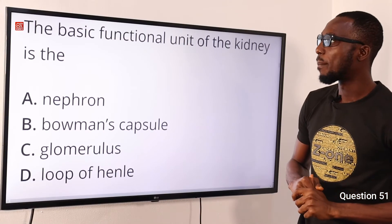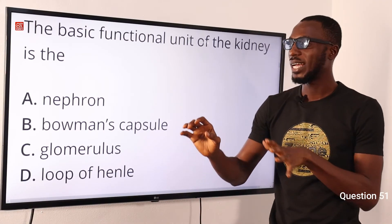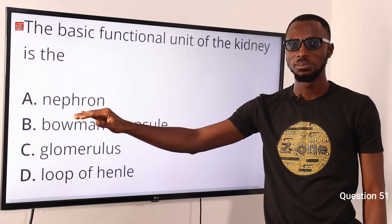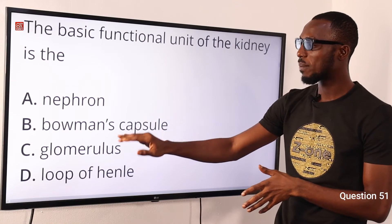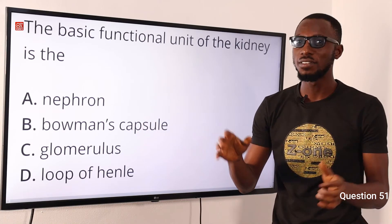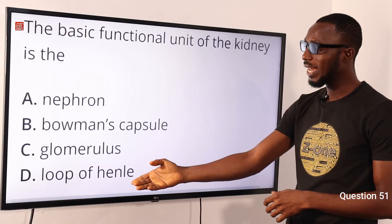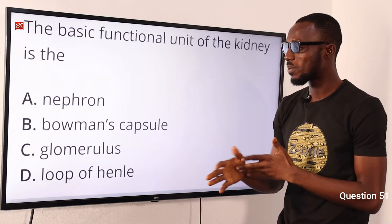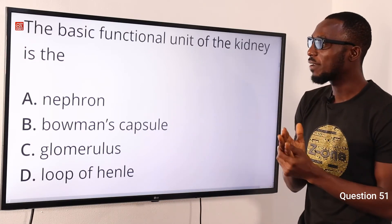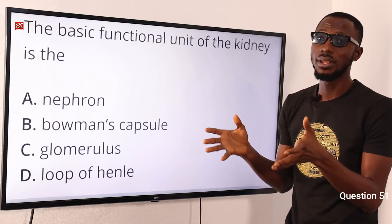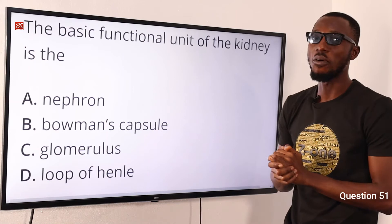Question 51. The basic functional unit of the kidney is the nephron, also called the urinary tubule. So the correct option is option A. Bowman's capsule and glomerulus are the site for ultrafiltration, and the loop of Henle is the spot for selective reabsorption. The nephron or urinary tubule is the basic functional unit of the kidney.